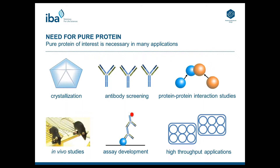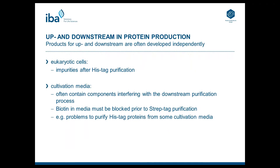There are many applications where you need very much pure protein in a very short time — for example, crystallization experiments, antibody screening, or protein-protein interaction studies. You can also use transiently expressed proteins for in vivo studies or assay development. When using high-throughput applications, it is very important to use a strategy that allows efficient purification, because you do not want to optimize a downstream or upstream process for each protein again.